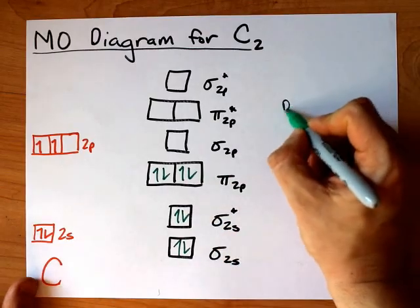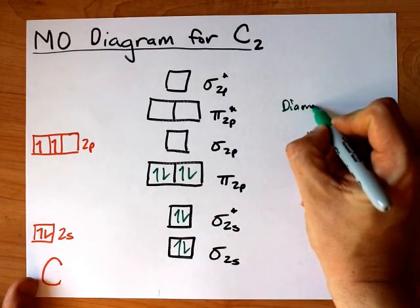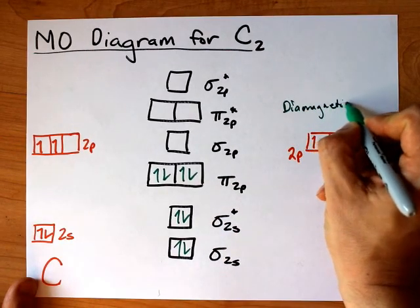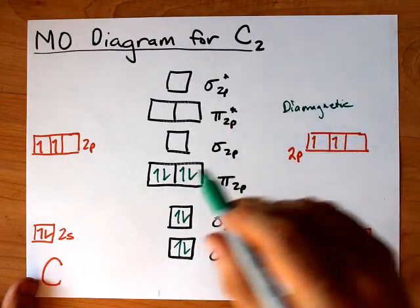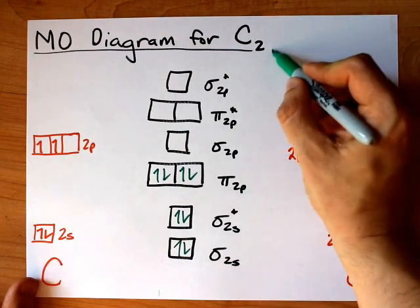So, first of all, this looks diamagnetic because all of my electrons are paired up. I don't have any lone electrons that are unpaired.